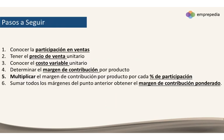Básicamente hay unos pasos a seguir. El más importante es conocer la participación en ventas — a veces la dan, a veces no la dan — pero desde ahí debemos arrancar: la participación que tiene el producto en nuestras ventas totales. Luego, saber el precio de venta unitario de cada uno de los productos.